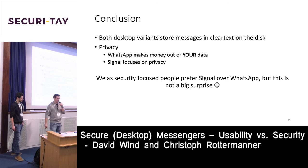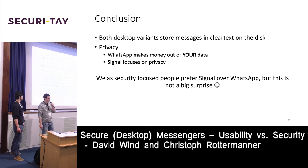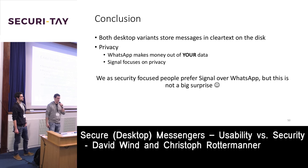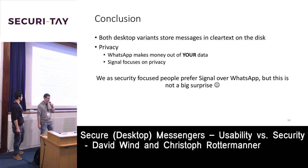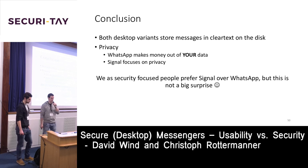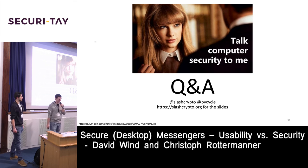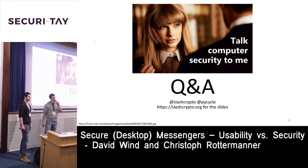Both desktop variants store messages in cleartext on disk. Regarding privacy, WhatsApp makes money from your data — even though chats are end-to-end encrypted, metadata can be sold by Facebook. Signal focuses more on privacy. So it's no big surprise that, as security-focused people, we prefer Signal over WhatsApp — and everyone should use Signal. That was our talk, thank you very much for your attention.